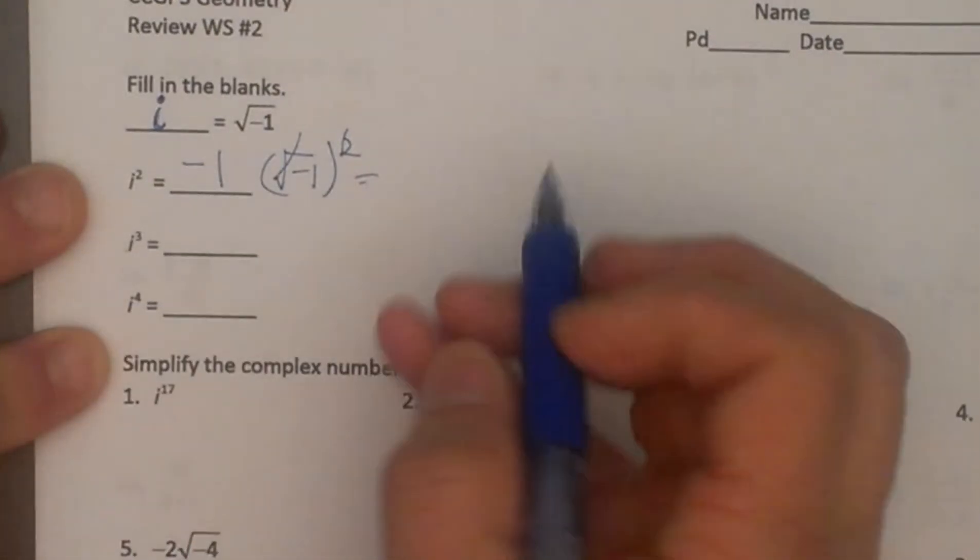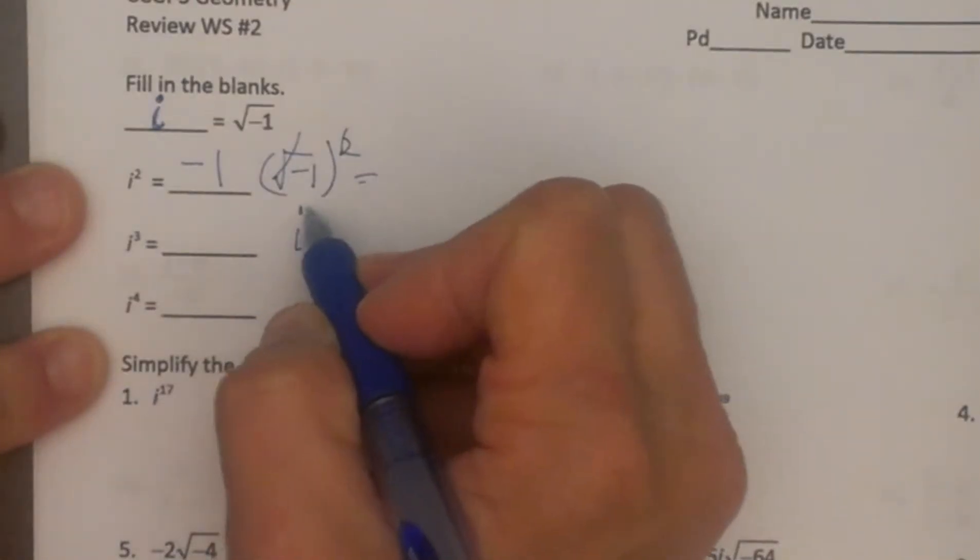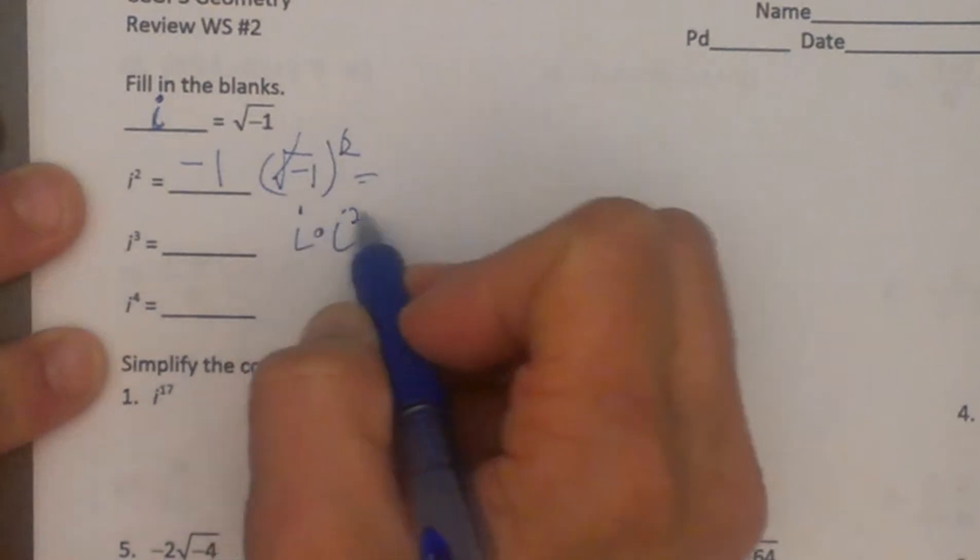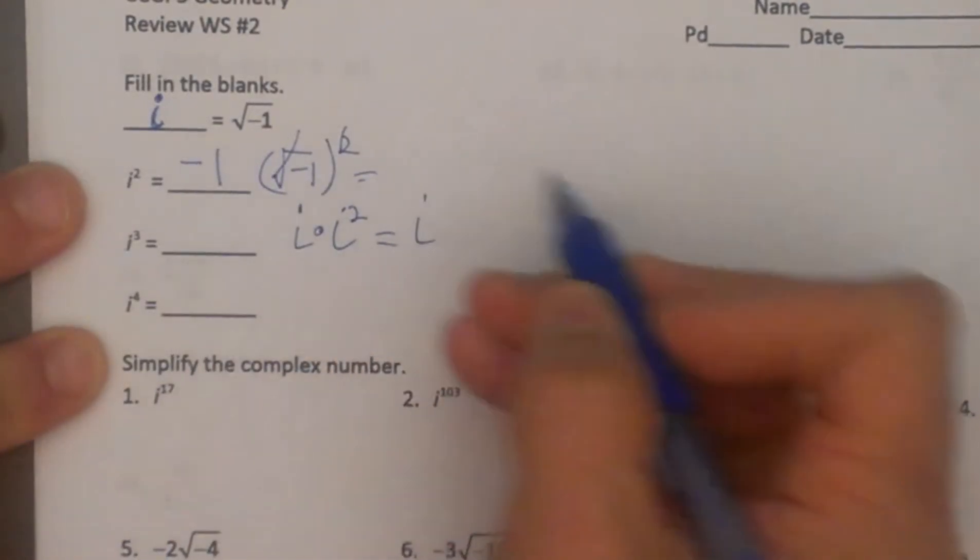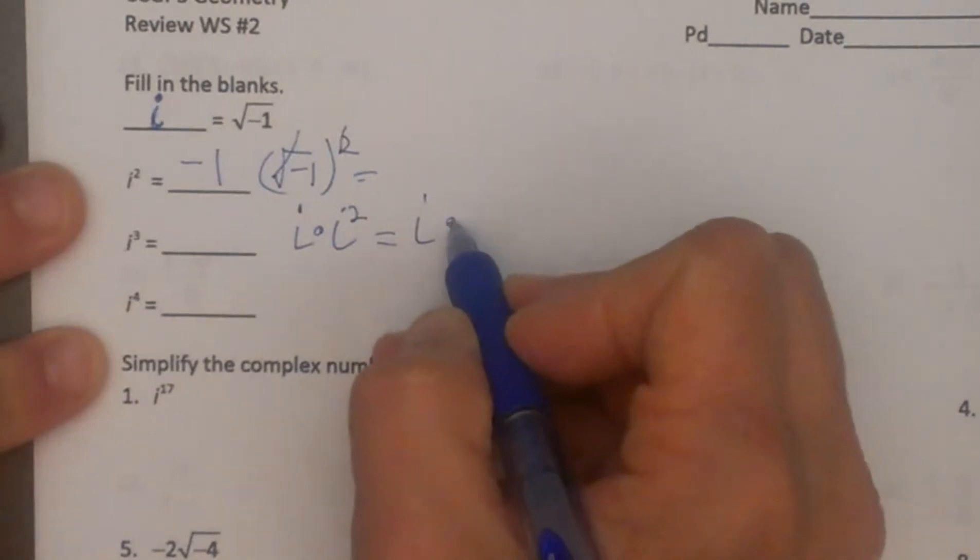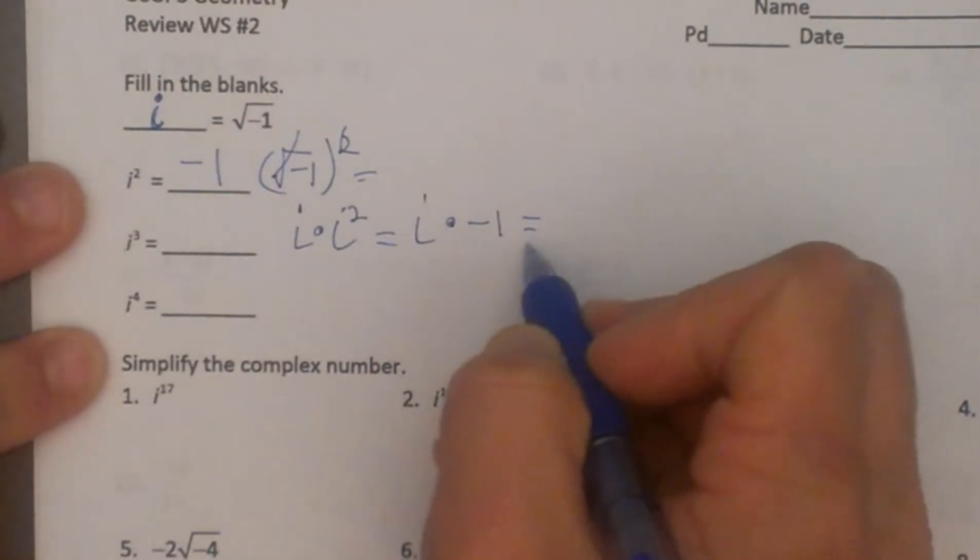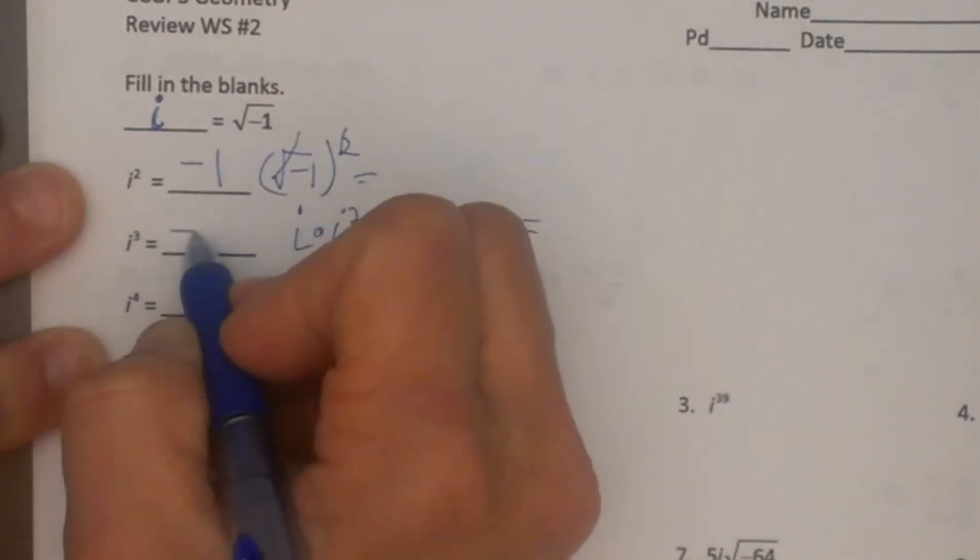i cubed is equal to i times i squared because you just add the exponents, right? So i is equal to itself and i squared is equal to negative one. When we multiply those together we get negative i.